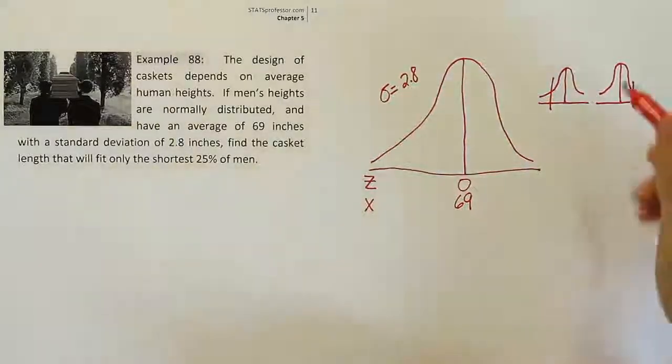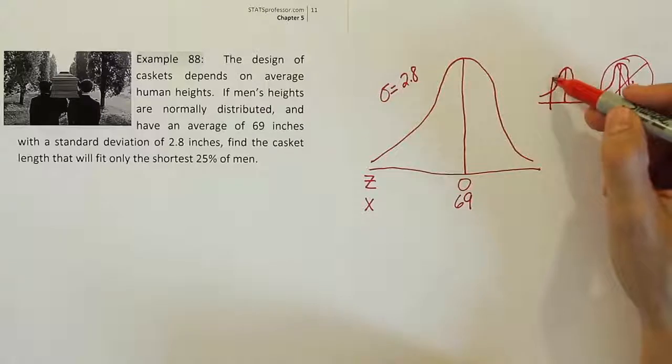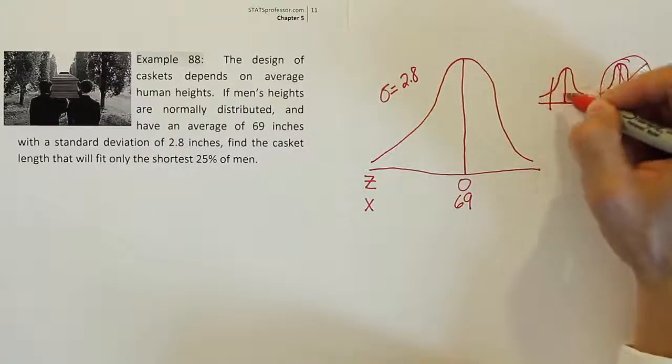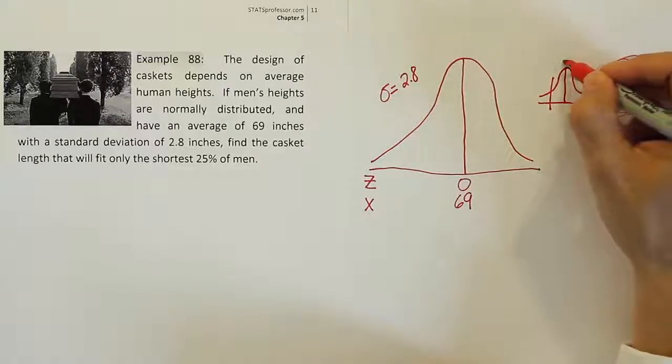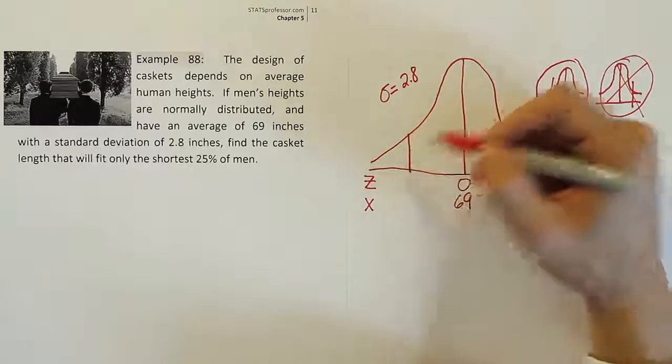The one on the right can't be the right answer because the area to the left of that line would have to be more than 50. So you're not in the shortest 25% if you're over here. You're above average in height if you're on this side. To be in the shortest 25% of men, it would mean that the 25% was down here in this tail. And the remaining 75% of the male population is above you. So I think this drawing makes the most sense. So I'm going to put my cut in the curve on the left-hand side.